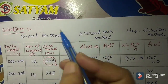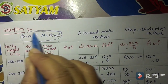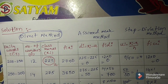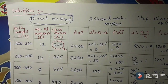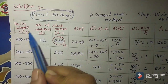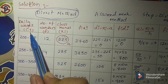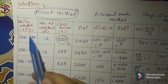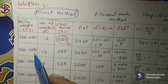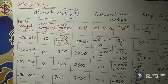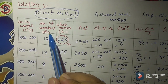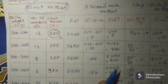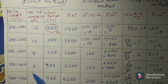The first method is the direct method. The formula is: x̄ equals sigma fi xi by sigma fi. In our problem, the daily wages are the class intervals. Write in the first column: 200 to 250, 250 to 300, 300 to 350, 350 to 400, and 400 to 450. The number of workers are the frequencies fi, with values 12, 14, 8, 6, and 10.